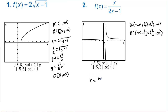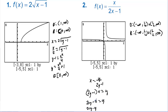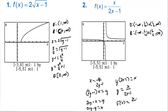We have x equals y over (2y minus 1). Multiply both sides by (2y minus 1): x(2y minus 1) equals y. Distributing: 2xy minus x equals y. Getting the y's on the same side: 2xy minus y equals x. Factor out y: y(2x minus 1) equals x. Therefore y equals x over (2x minus 1), so f-inverse of x equals x over (2x minus 1). The function is its own inverse.